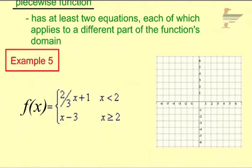So the domain is all of our x values. Here we have our function f of x equals, and we have two equations: two-thirds x plus 1 and x minus 3. If you notice, off to the right, it tells us a little bit about our domain, our x values.